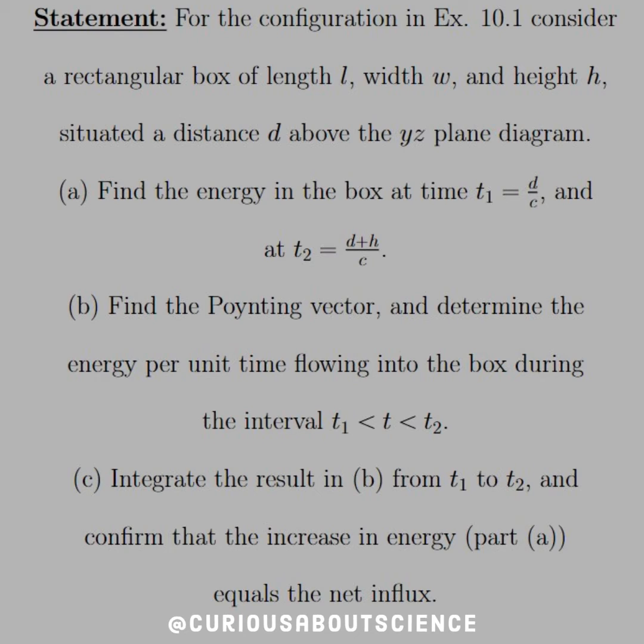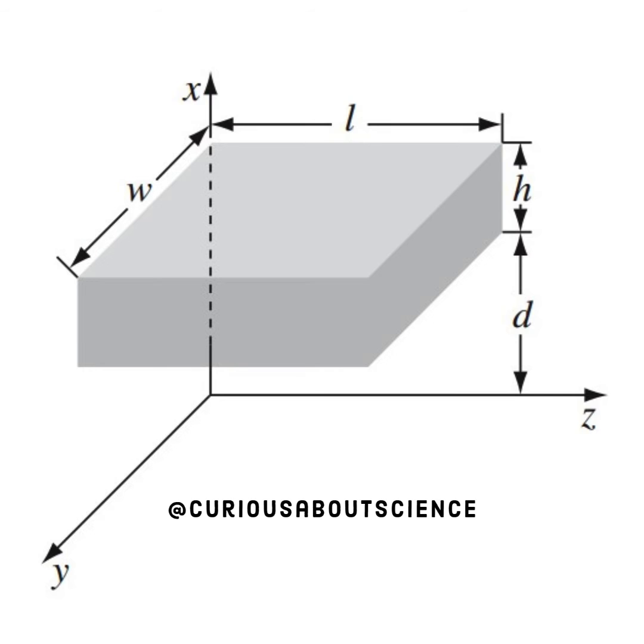Again, meter over meter per second gives us seconds, so we're good there unit-wise. In part B, we want to find a pointing vector and determine the energy per unit flow into the box during the interval of T between T1 and T2. Part C: integrate the result from B from T1 to T2 and confirm the increase in energy part A equals the net influx. So what is this box we're talking about?